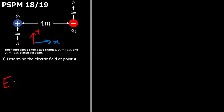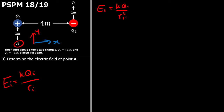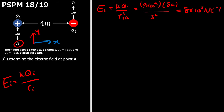The electric field depends upon the charge, so I'll write it as KQi over Ri squared, for whatever position you want it from — for example, A. So I can write down the first one, which is E1 from charge 1: KQ1 over R squared from charge 1 to A. K is 9 times 10 to the power of 9, Q1 is 8 microcoulombs, and the distance is 3 meters squared. That gives me 8 times 10 to the power of 3 newton per coulomb.